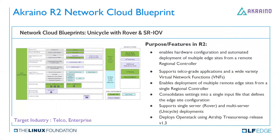The Cloud Blueprint still has the unicycle with Rover and SRLV. Originally AT&T had the unicycle and Rover. Unicycle means a rack at the CO place with about six to seven servers. Rover means a far-edge server — just one server independently. They use the same software framework to enable hardware configuration and automated deployment of multiple edge sites from a remote regional controller. It's more for provisioning, supporting many VN apps, both single-server Rover and multi-server Unicycle deployments. It leverages L-Ship.